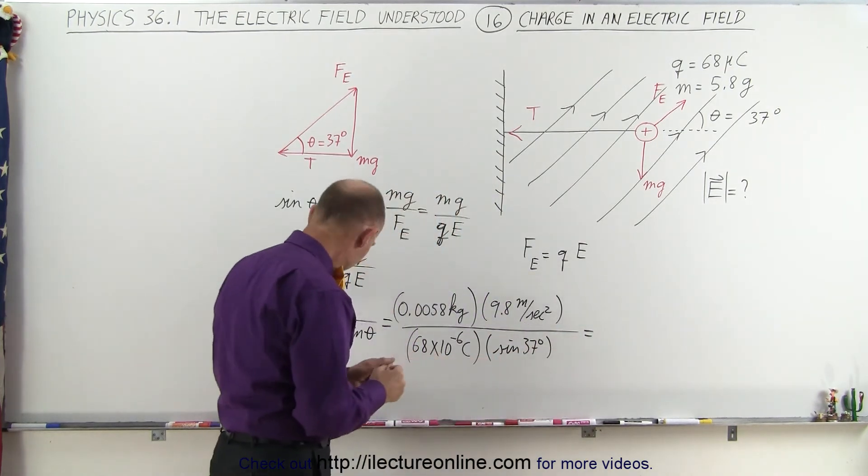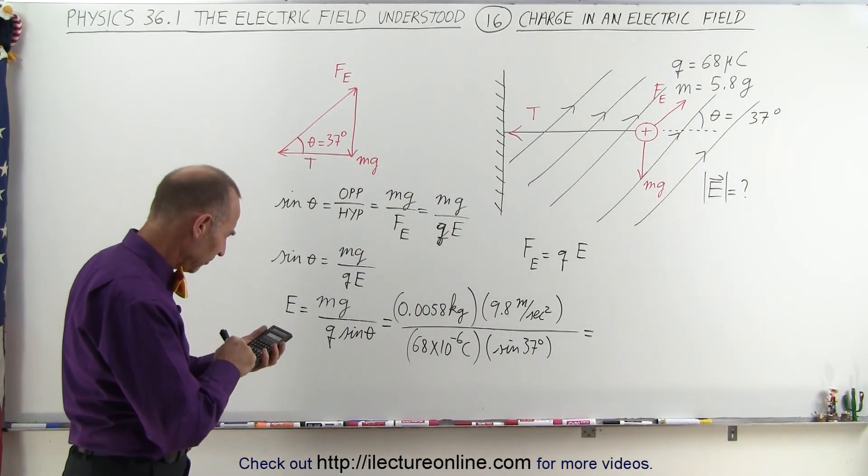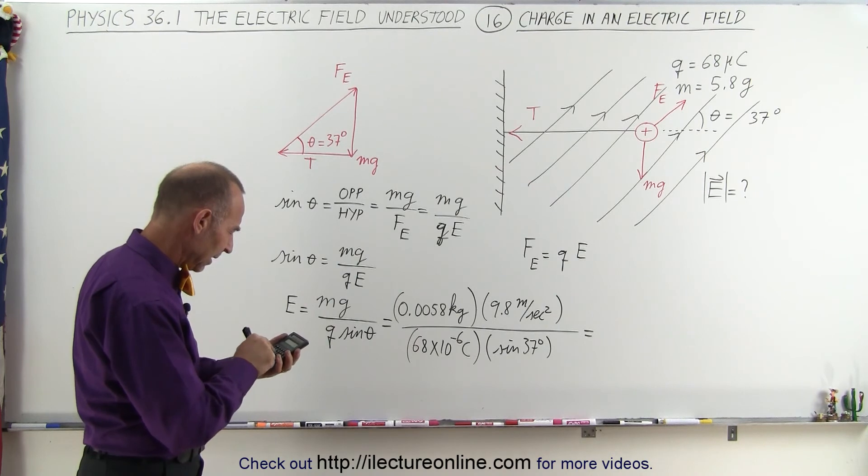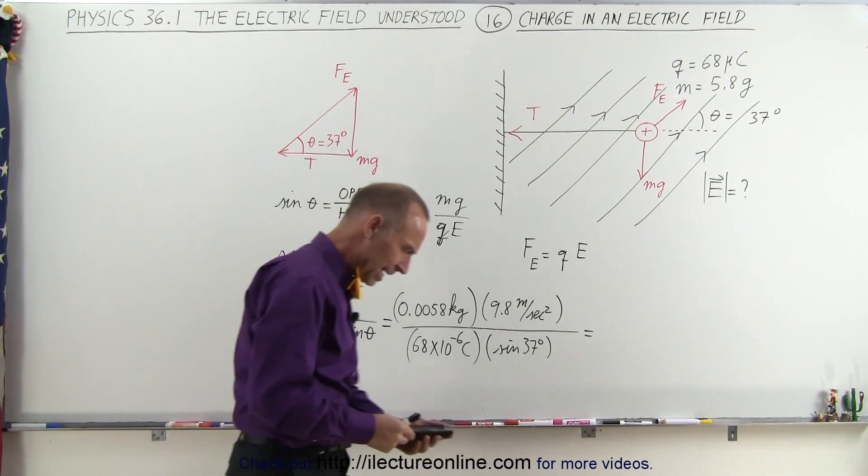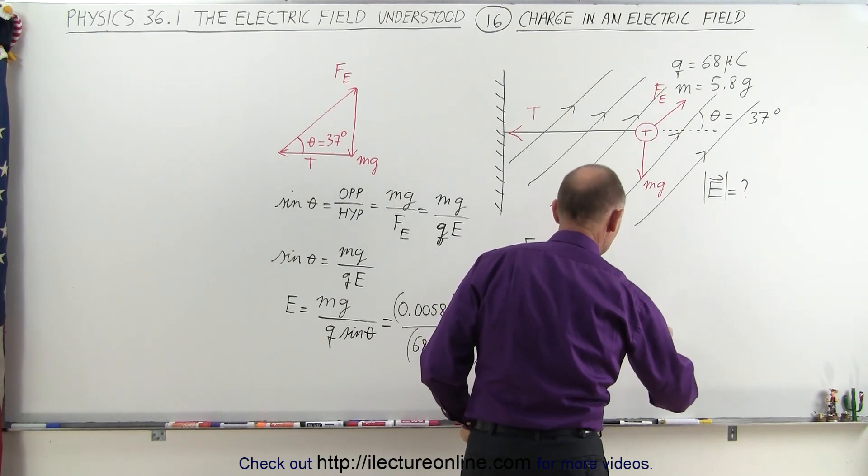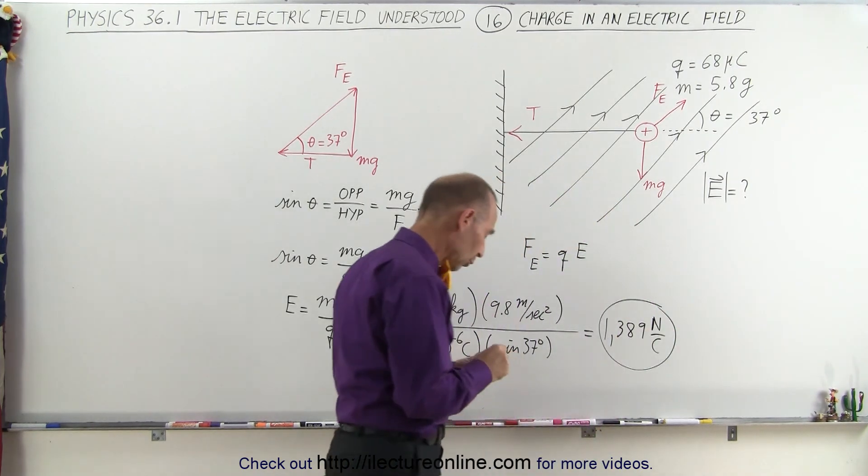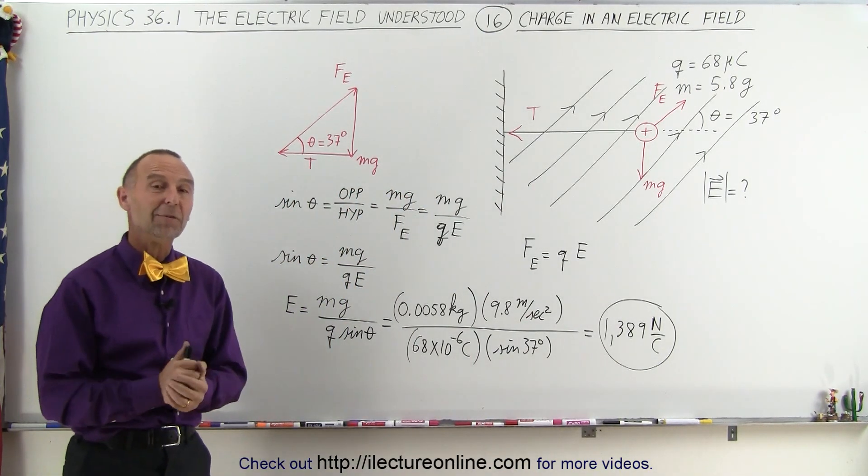Now let's get a calculator in here and figure out what that's equal to. So 0.0058 times 9.8 divided by 68E to the minus 6, divided by, take the sine of 37, equals, and it looks like 1,389 newtons per coulomb. 1,389 newtons per coulomb is the strength of the electric field required to get that string to be perfectly horizontal. And that's how it's done.